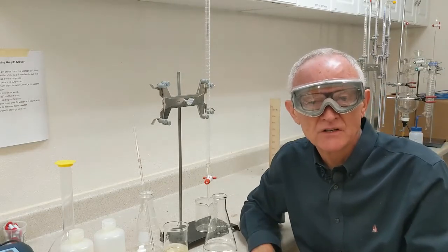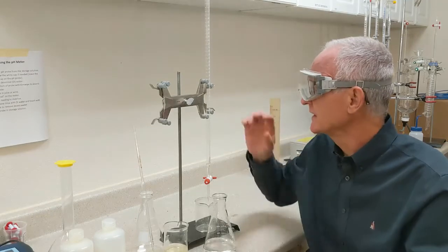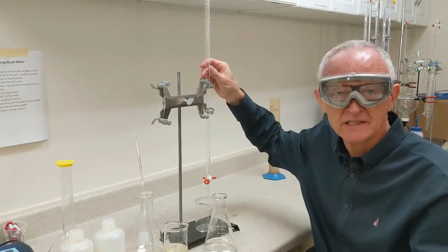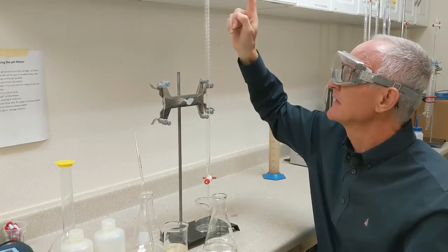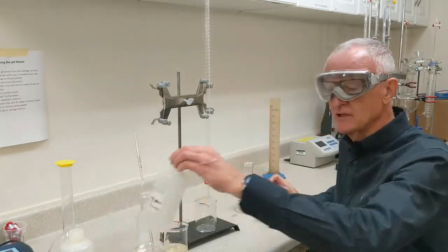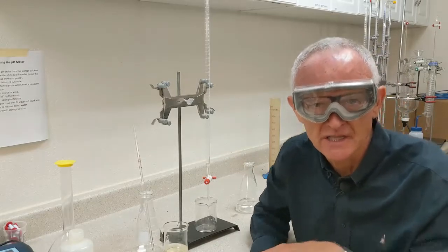Before I get started on the titration, I need to put in my burette 0.1 normal sodium hydroxide. So I've got a funnel at the top of the burette. I'm going to fill the burette with sodium hydroxide.